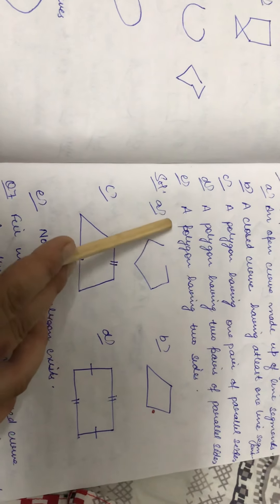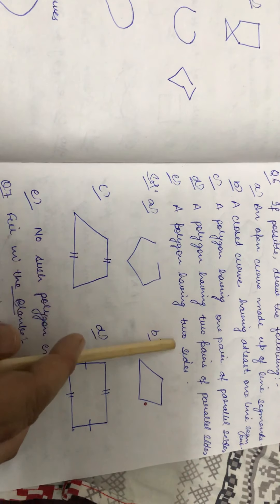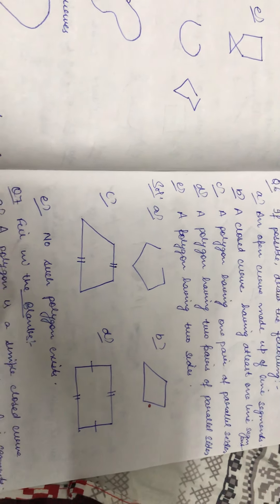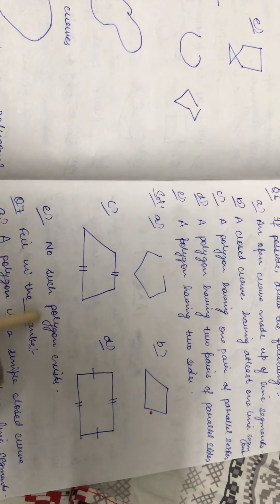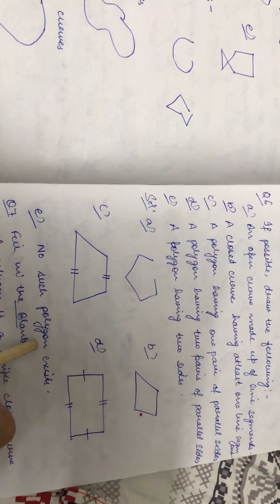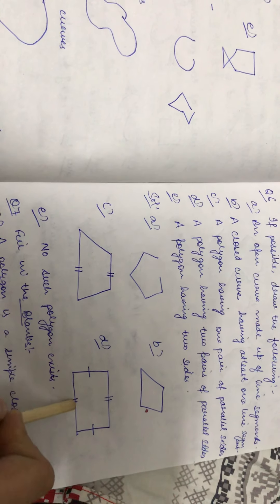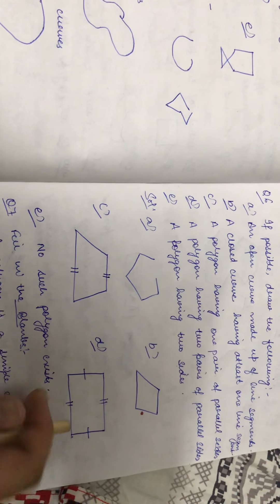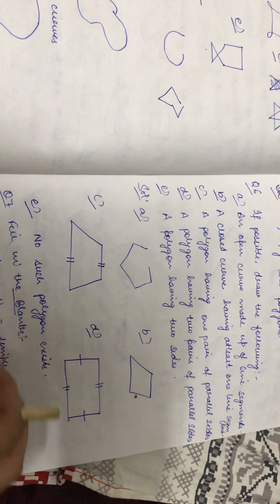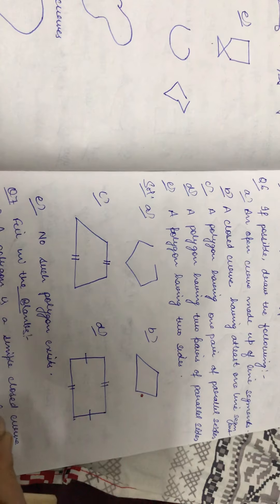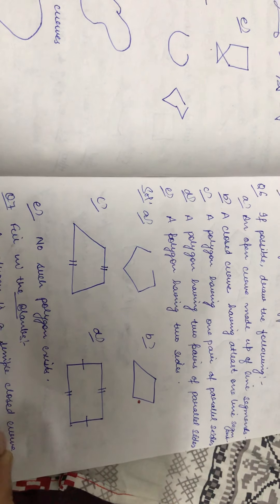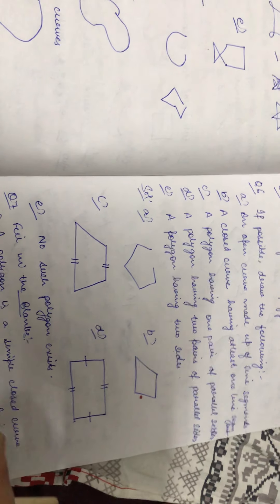E part: a polygon having two sides. Now we cannot draw such a polygon with two sides. If I draw like this, then it is not closed, so it is not a polygon. The minimum sides required to draw a polygon is 3, which is a triangle.